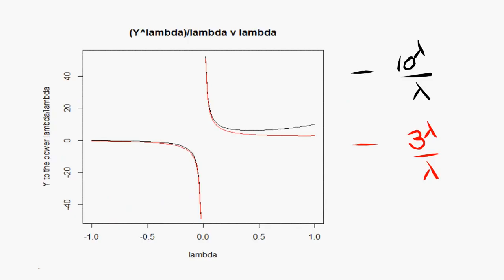So now we'll try scaling the first attempt by dividing by lambda. Now order is preserved but there is a discontinuity in the parameter space at zero. That's bad guys.